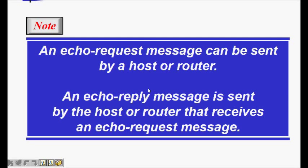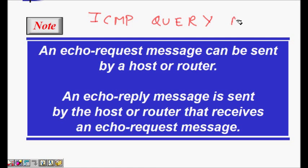In this lecture we will continue with ICMP messages used for error handling and debugging of the internet. This time we will look at ICMP query messages. They are used for debugging. The first one is the ICMP echo request message, which can be sent by a host or a router. This is one of the very important messages used in ping.